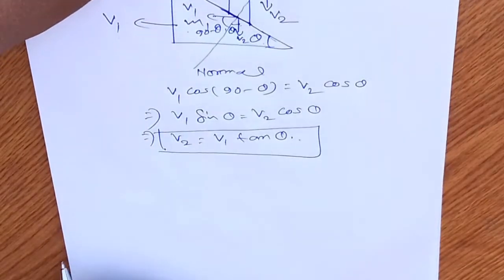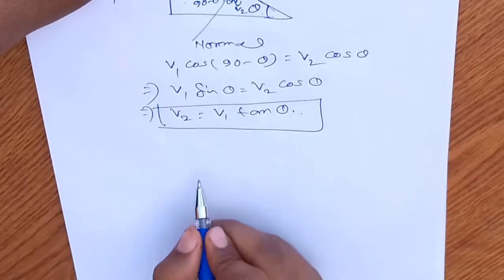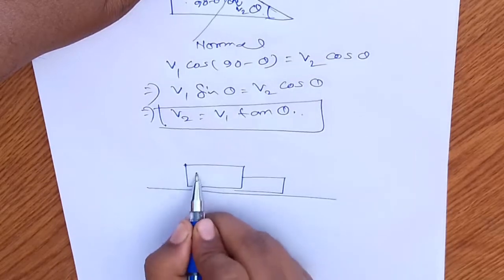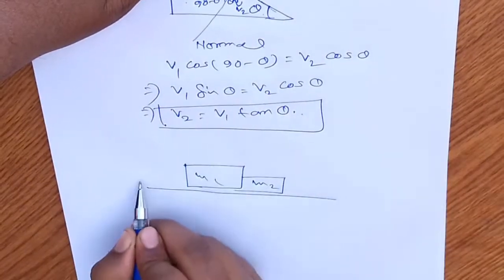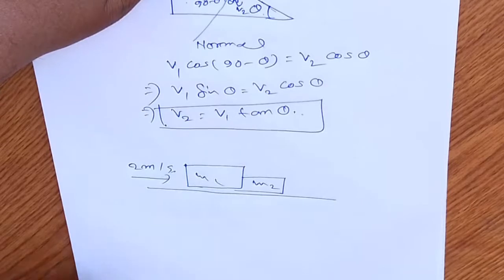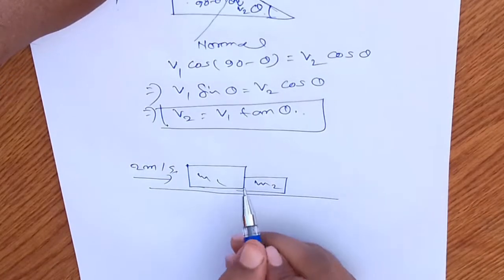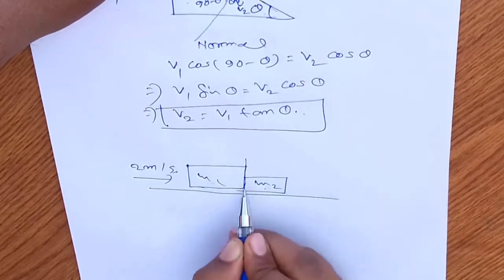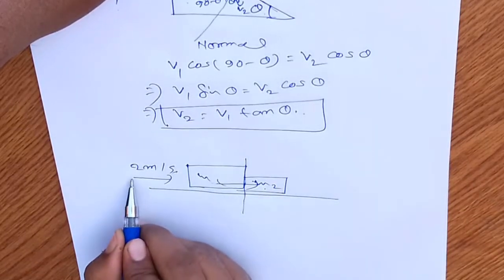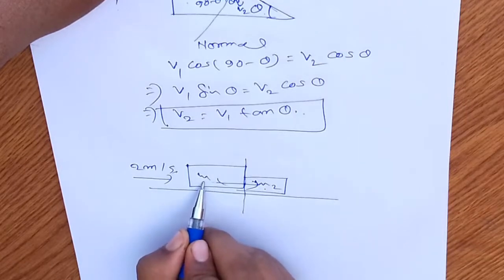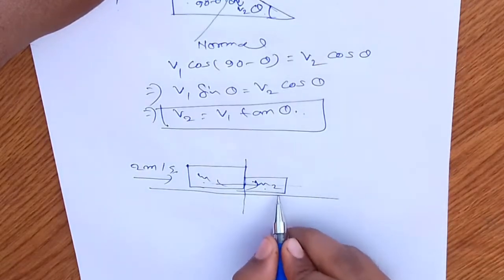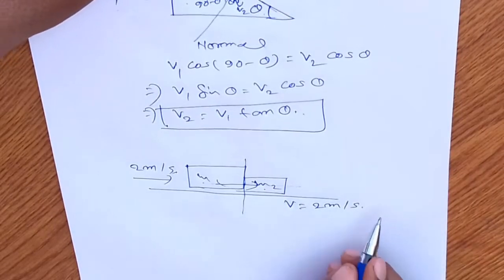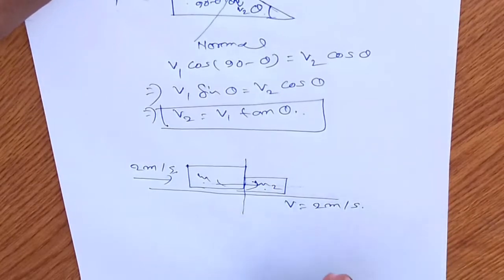I have taken the first example: this is one block m1 and this one is another block m2 attached to it. You are applying a velocity of 2 meters per second. What will be the velocity of m2? For this, we need to find the common tangent and the common perpendicular. The component is along the direction of the normal, hence the velocity of m2 will also be the same value — 2 meters per second. I hope you understand the rigid body constraint.